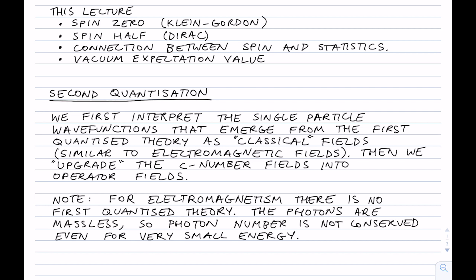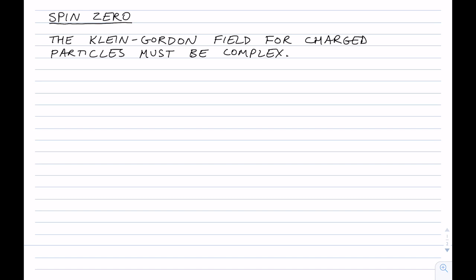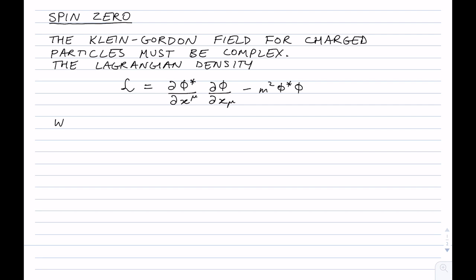Before we go on to looking at the fields themselves, I want to start by looking at the Lagrangian density and then generating the Hamiltonian density for the Klein-Gordon equation. We'll start with spin zero particles. The Klein-Gordon field for charged particles has to be complex, as we discovered earlier. We can write the Lagrangian density in a form which is manifestly covariant.